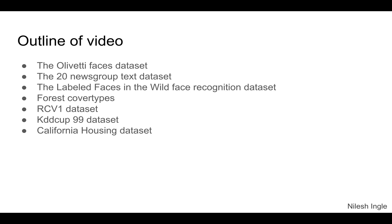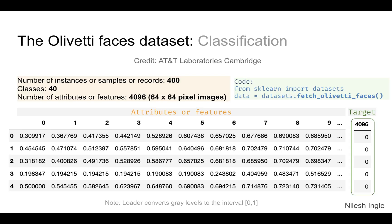The first dataset is the Olivetti Faces dataset. This dataset has around 400 samples or records — each record is one image. There are 4096 features, since each image is 64 by 64 pixels, and when we unravel that array we get 4096 columns, which are the features. There are 40 classes.